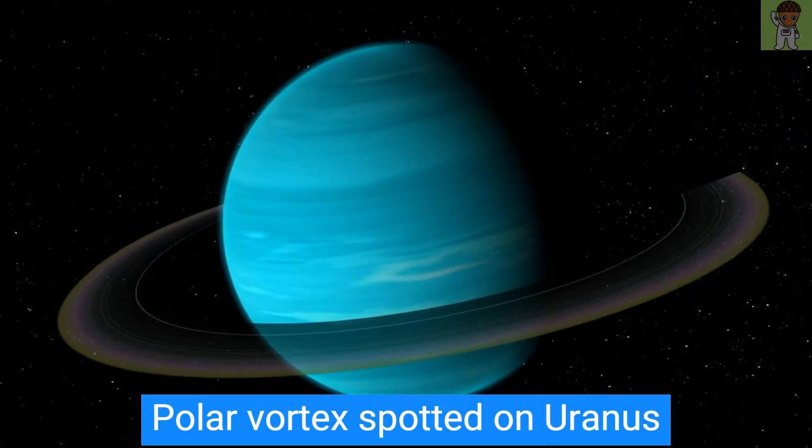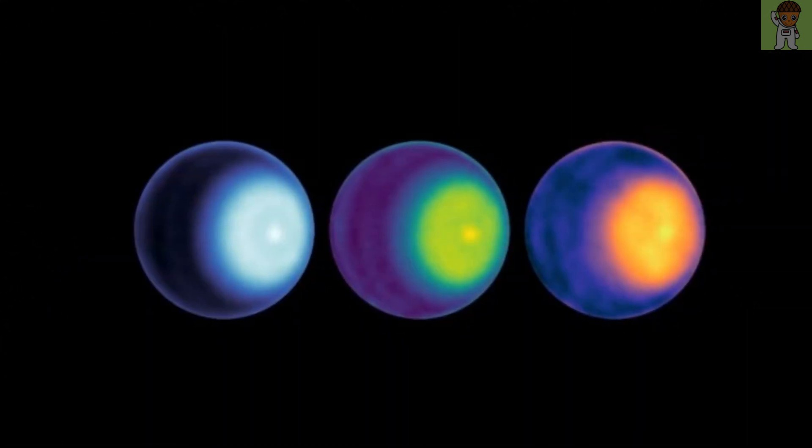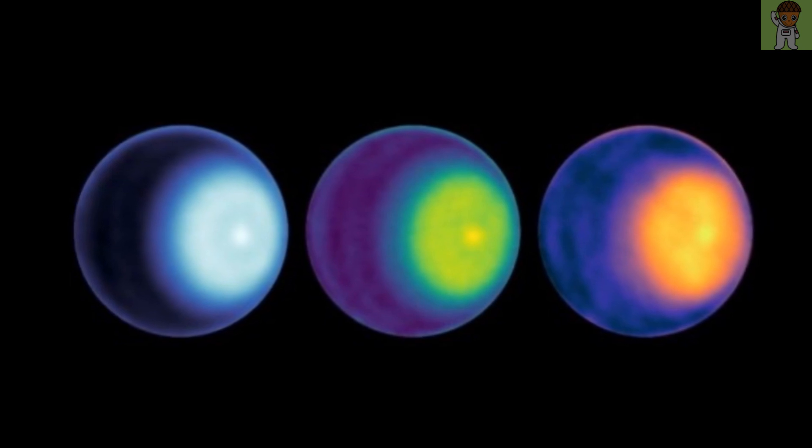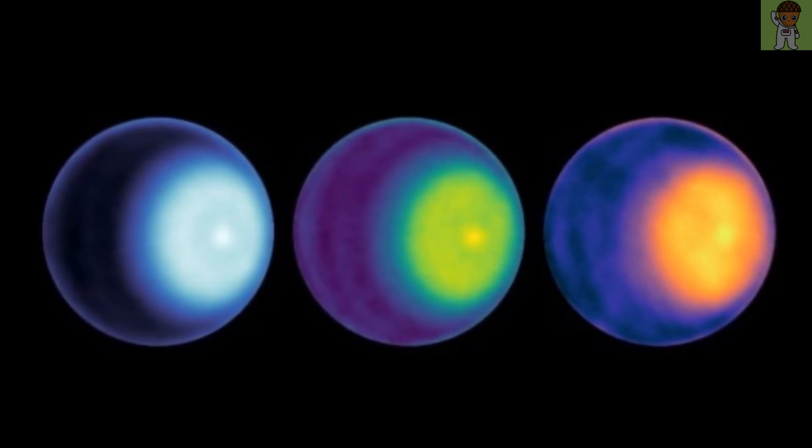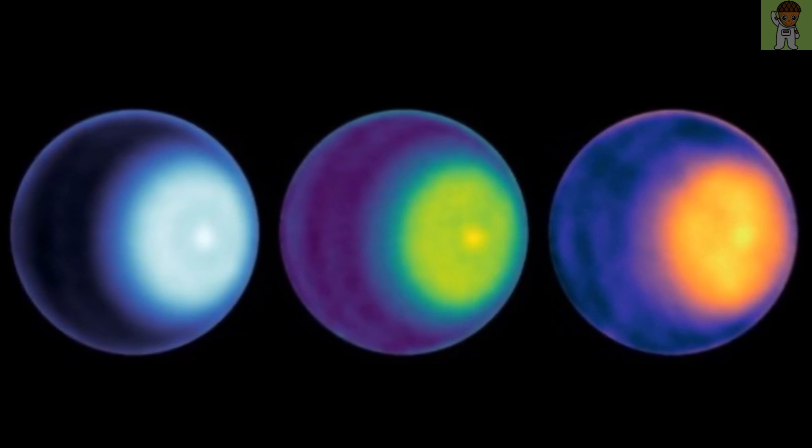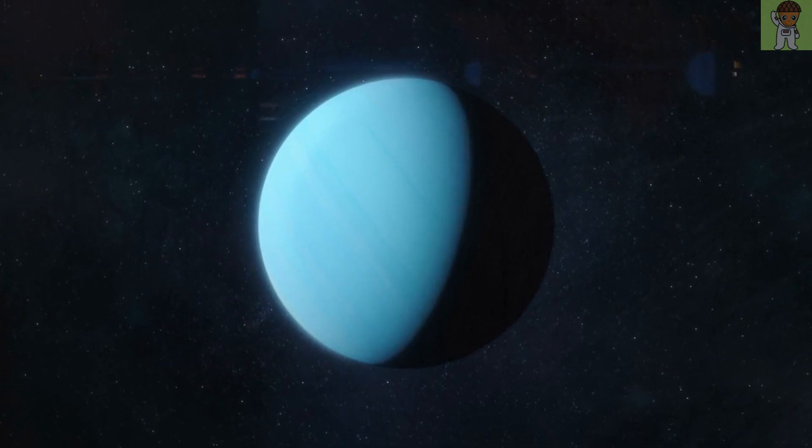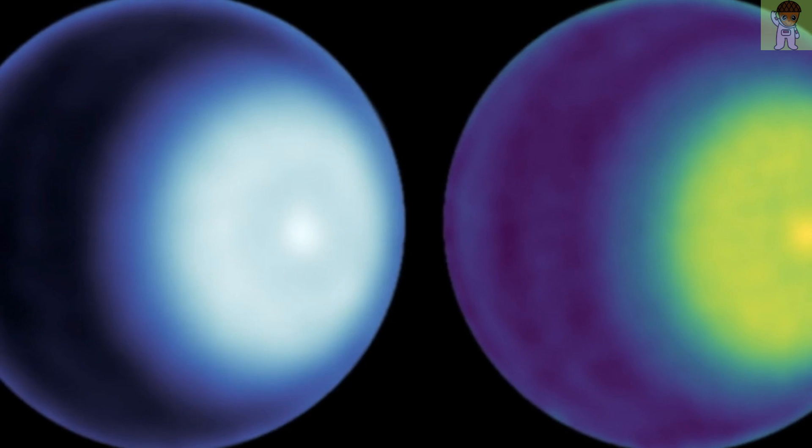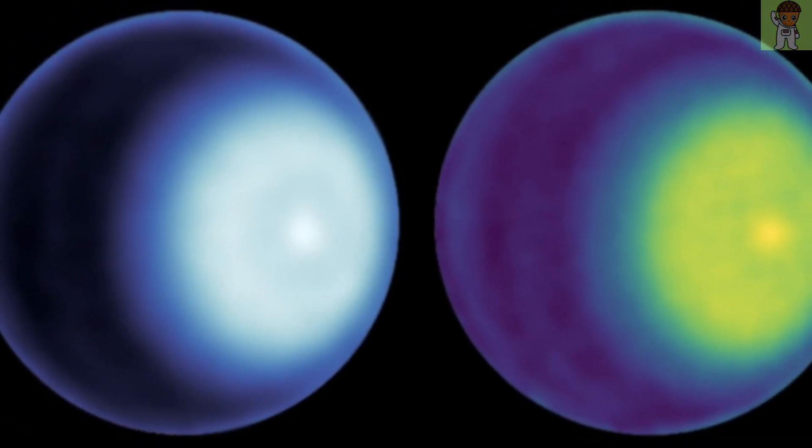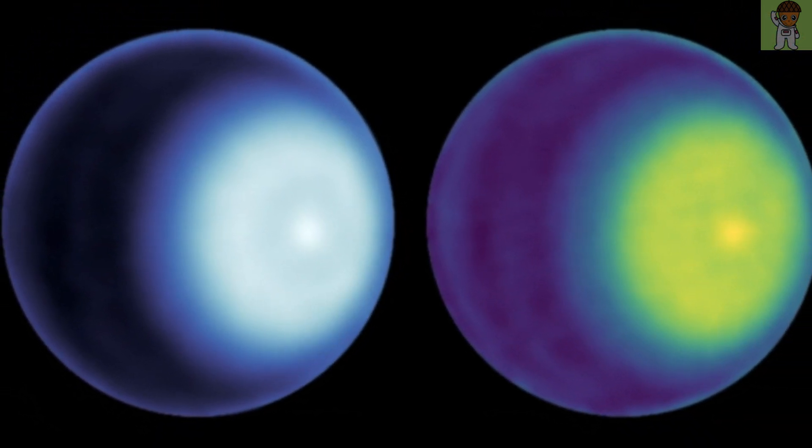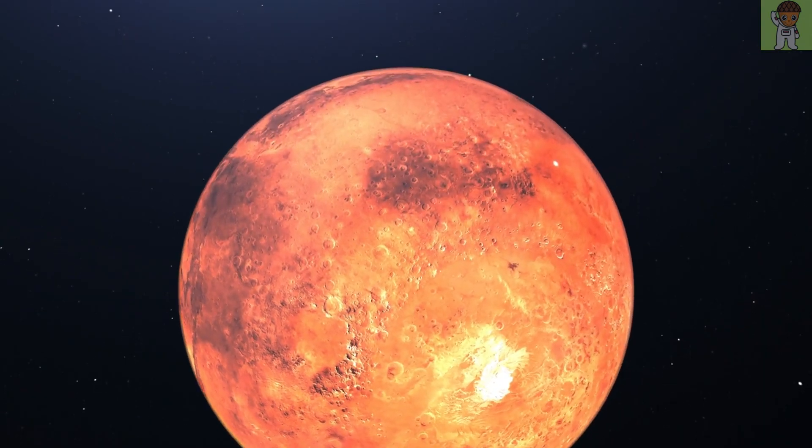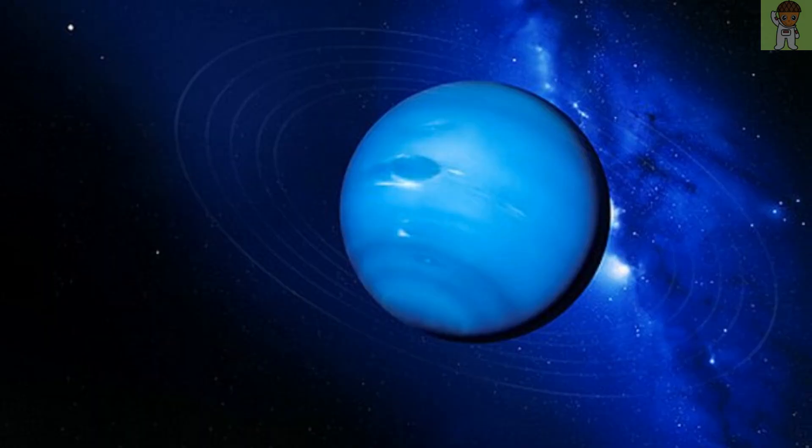Polar vortex spotted on Uranus. Moving into the outer planets, new images of Uranus showed a gigantic polar vortex swirling around the ice giant's north pole, suggesting the planet's atmosphere is not as inert as we previously believed. A polar vortex is a swirling ring of hot or cold air that circles a planet's polar region. These vortices have been spotted on Venus, Earth, Mars, Jupiter, Saturn, and Neptune.